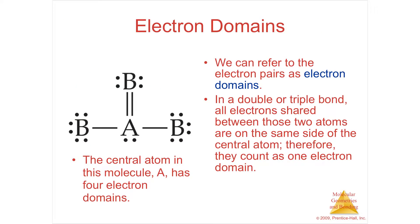The most important thing you need to do before looking at shapes is understand the idea of an electron domain. An electron domain is just a group of electrons surrounding a central atom. Here I've got a central atom called A, and a lone pair would be an electron domain — it's a group of electrons attached to the central atom. A single bond is an electron domain, and a multiple bond, like a double or triple bond, is also just one electron domain, because it's a group of electrons attached to a central atom.